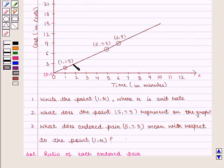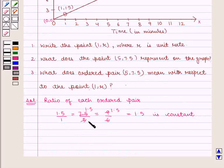As the graph is of a straight line passing through the origin and the ratio of each ordered pair is constant, we can say it is a proportional relationship.